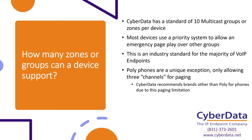There's one unique exception, and that would be Poly. Most phones excluding Poly support up to 10 different groups in a priority-based system. For some reason, Poly determined that only three channels are necessary: general, high visibility, and emergency paging. You only get three zones to play with. Typically when dealing with paging to Poly phones, it's just going to be phone-to-phone since they don't make other hardware like speakers or paging interfaces, so three channels might be acceptable in that scenario.